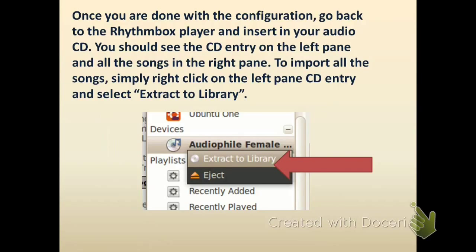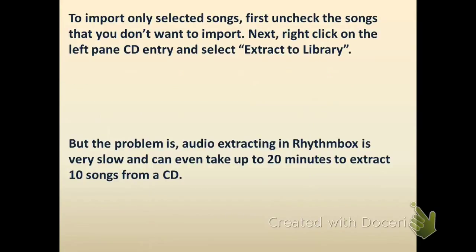Insert your CD into your CD drive. You should see the CD entry on the left panel and all songs in the right panel. To import all the songs, simply right-click on the left-hand CD entry and select Extract to Library, as you can see in the screenshot. Your songs will be exported to the specified location.